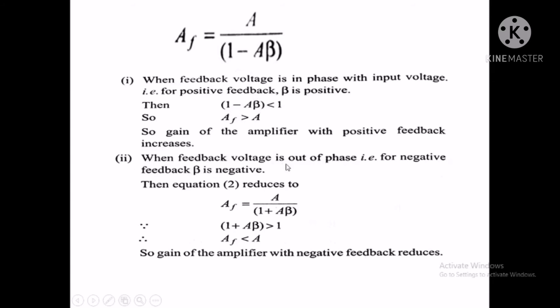Case number 2: when the feedback voltage is out of phase — that is, negative feedback. If the feedback is negative, beta is negative, and the negative sign makes the term become 1 plus A beta. The denominator increases, so the gain with feedback decreases. Since 1 plus A beta is greater than 1, Af is less than A. The gain of the amplifier with negative feedback is reduced.